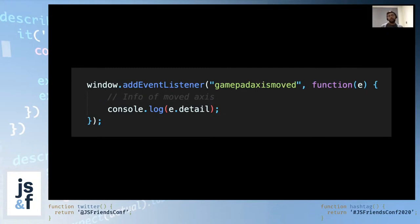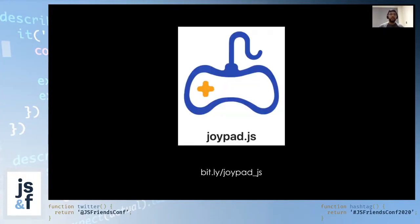We've been able to extend the gamepad API — the gamepad interface in particular — to track button presses and axis movements. Now, you don't have to do this entire implementation yourself, because there is an existing open source library you can simply use in your projects. I'd like to introduce joypad.js, a JavaScript library that lets you connect and use various gaming controllers with browsers that support the gamepad API. It's 5KB in size with zero dependencies and has support for button press, axis movement events, and much more. All the code snippets I showed you have been taken from the source code of the library itself. You can check it out at bit.ly/joypad_js.